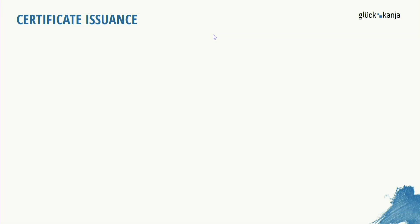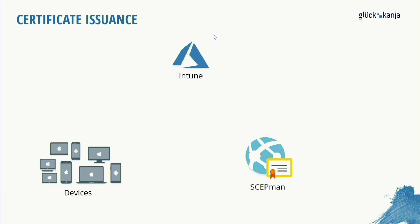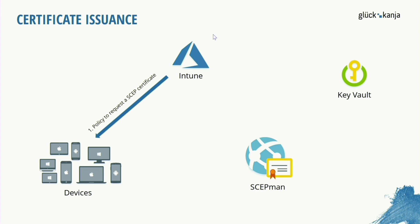After deployment, we want to look at how to deploy certificates to our clients. We have our devices, Microsoft Intune, our SCEPman solution, and the Key Vault — these are the parts needed for certificate issuance. The first step is to create a Microsoft Intune policy or configuration profile. In this profile we define the complete SCEP certificate and also the URL of our SCEPman solution. Then we assign these policies to our devices, and Intune deploys the policy. The devices need to request a SCEP certificate and get the URL from the Intune profile, then they contact our SCEPman solution.